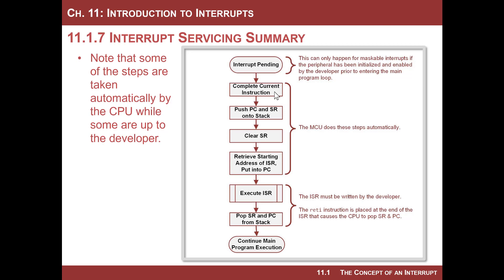That leaves the CPU in a state where it can stop, go do something else, and come back and pick up where it left off. Then it starts executing the interrupt service routine. It is going to push the program counter and the status register onto the stack. That preserves what is happening in the main program and allows the service routine to return to the exact moment it was interrupted. Then it clears the status register — giving the ISR a fresh start — and also clears the global interrupt enable bit so no other maskable interrupts can interrupt that interrupt.